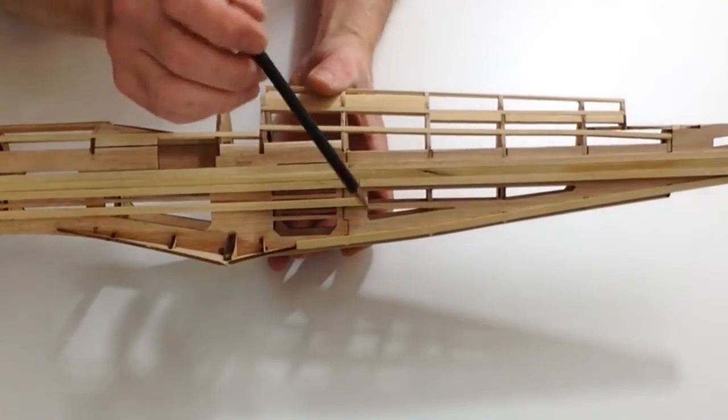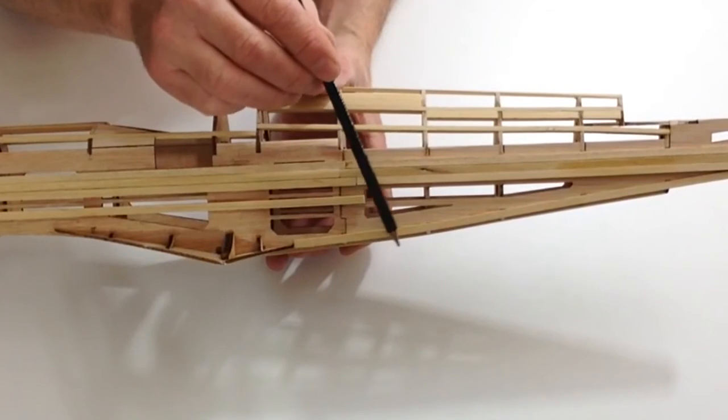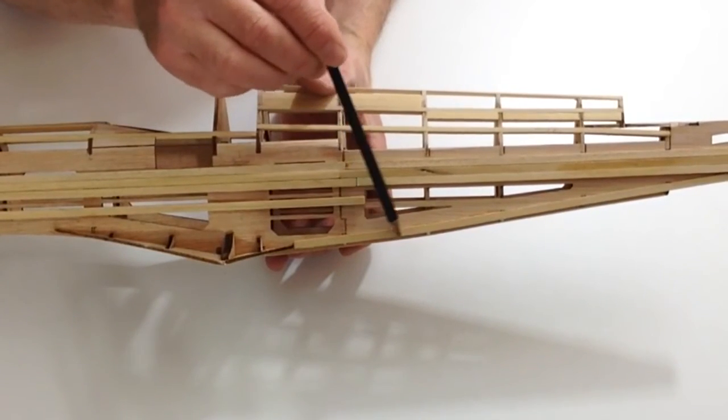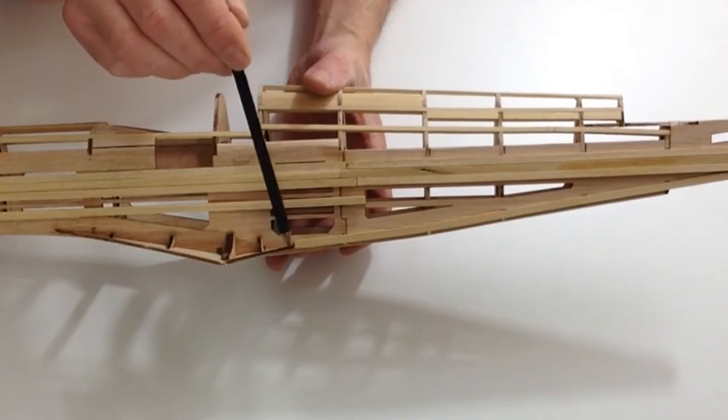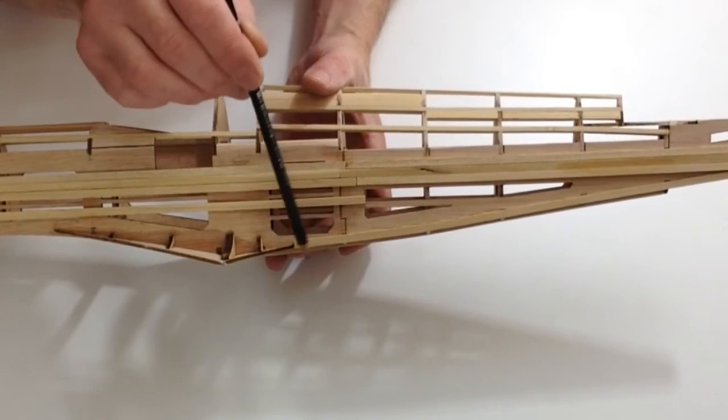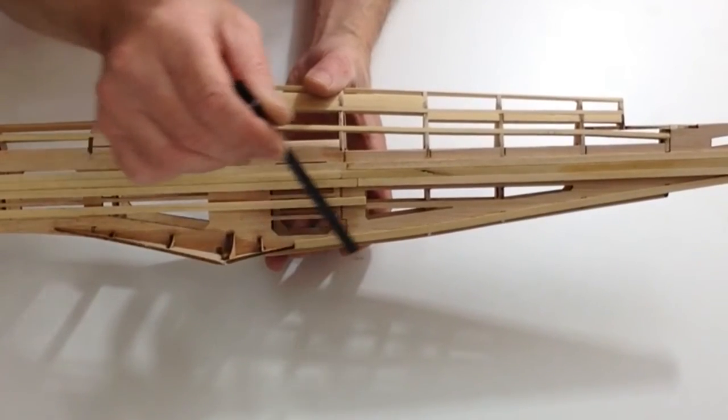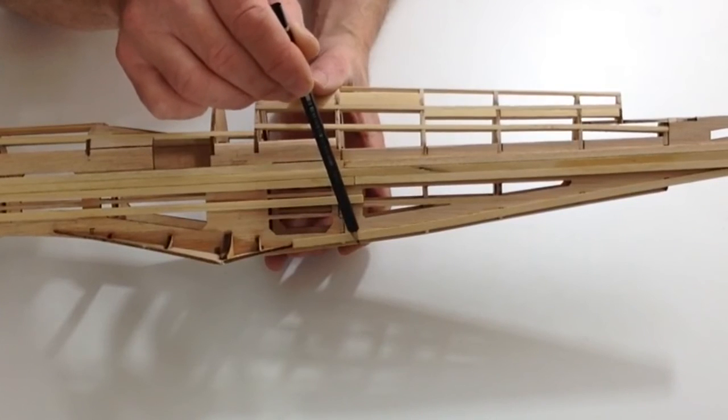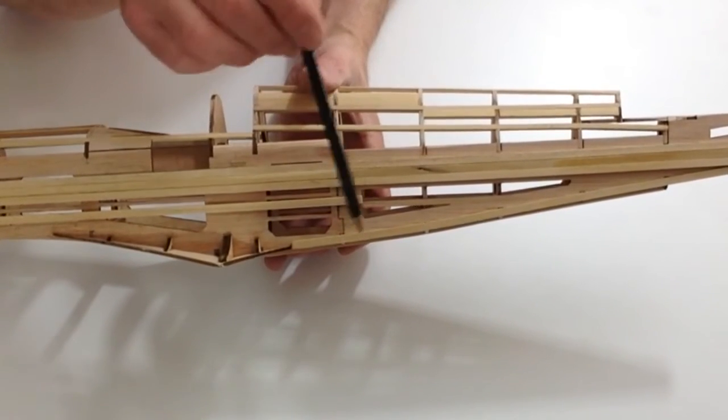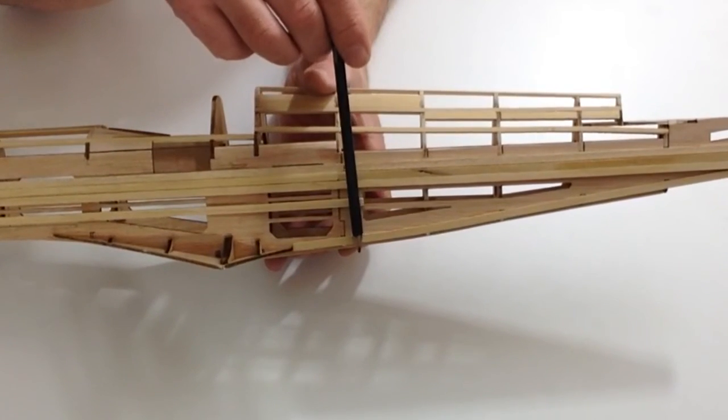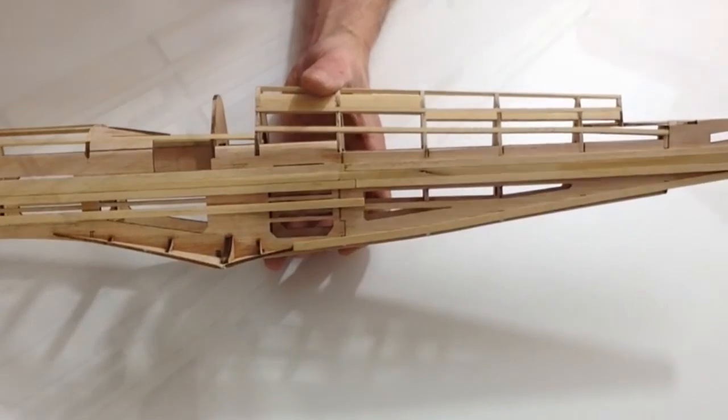Once you've done that, glue a 2x5mm strip along the lower edge of the rear section, following the curvature as it curves up, and then clamp that into position. Once again, do exactly the same for the other side. That completes this stage.